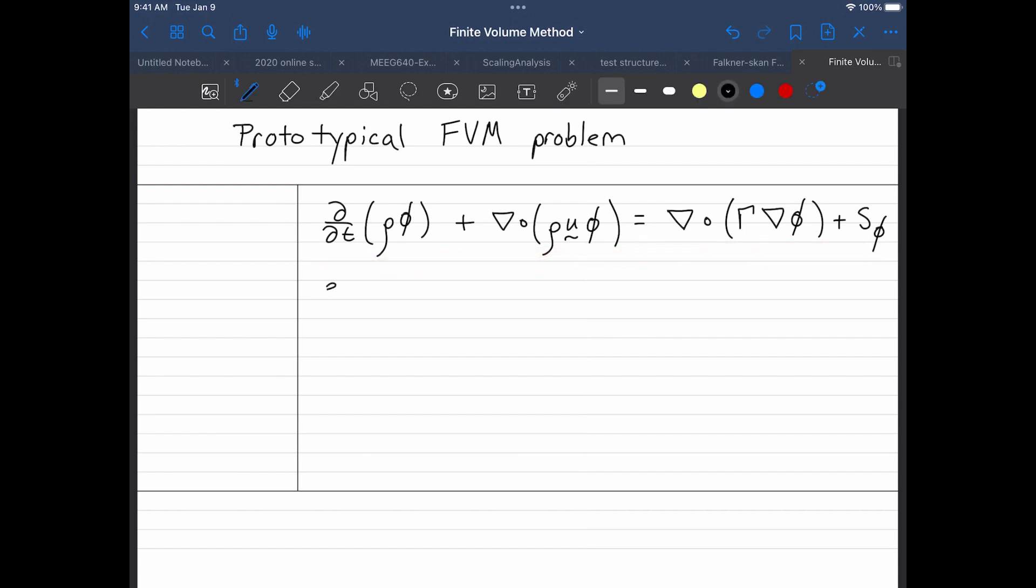And so, for example, in this equation, if I set phi equal to 1 and I set gamma equal to 0, that would represent mass conservation, the mass conservation equation. So that would replicate our PDE for mass conservation.